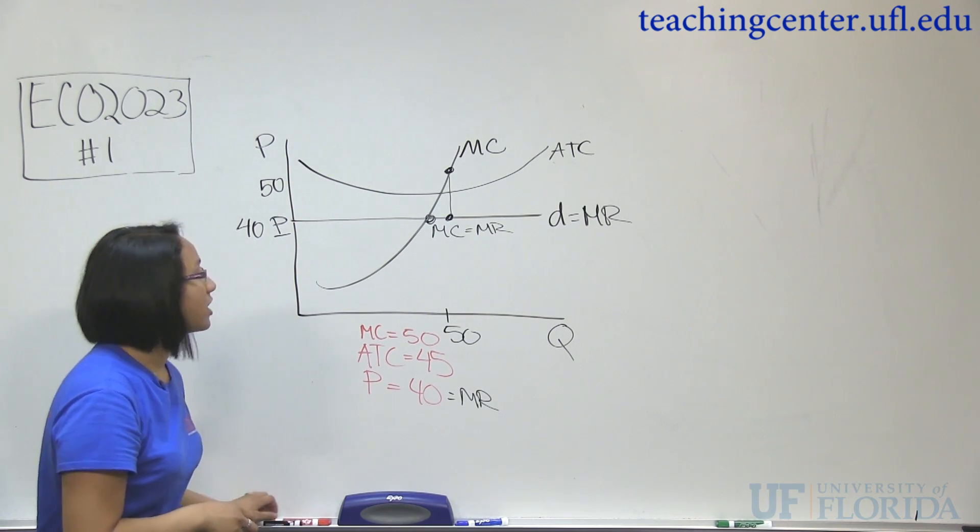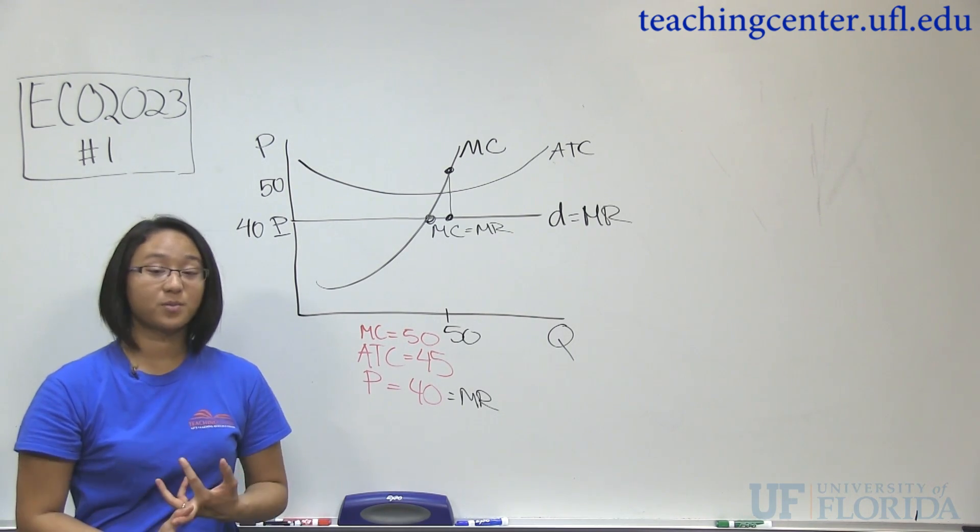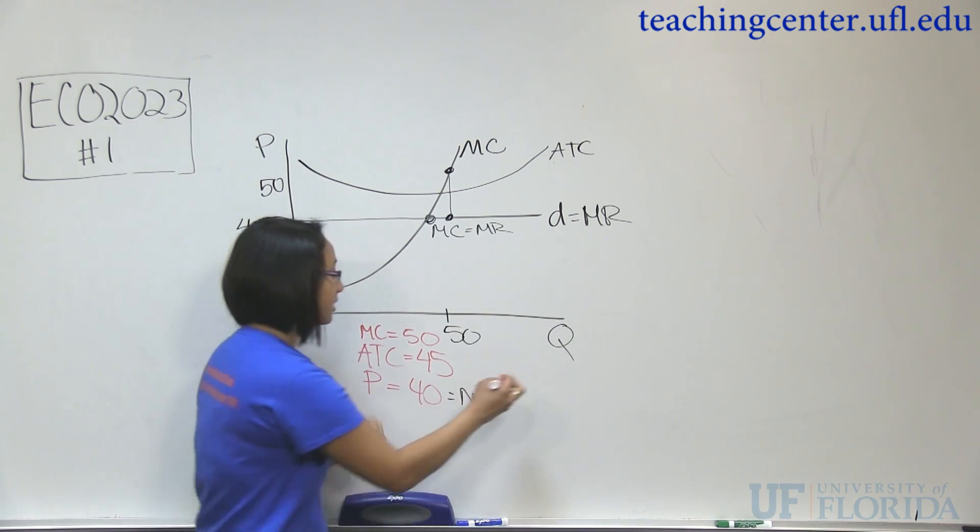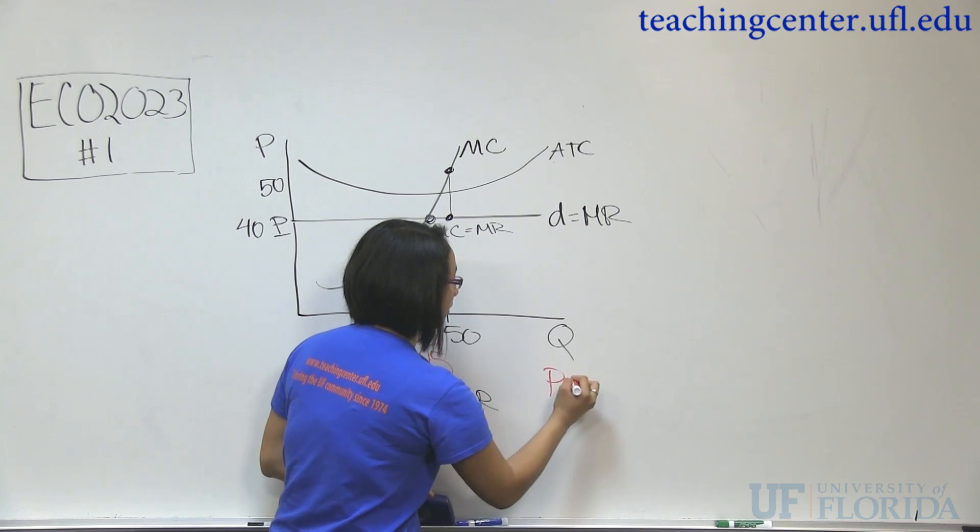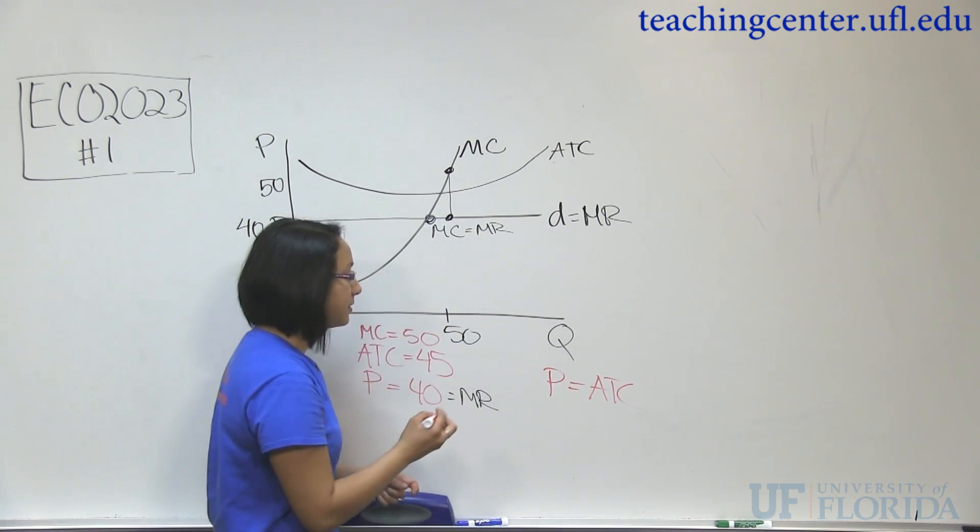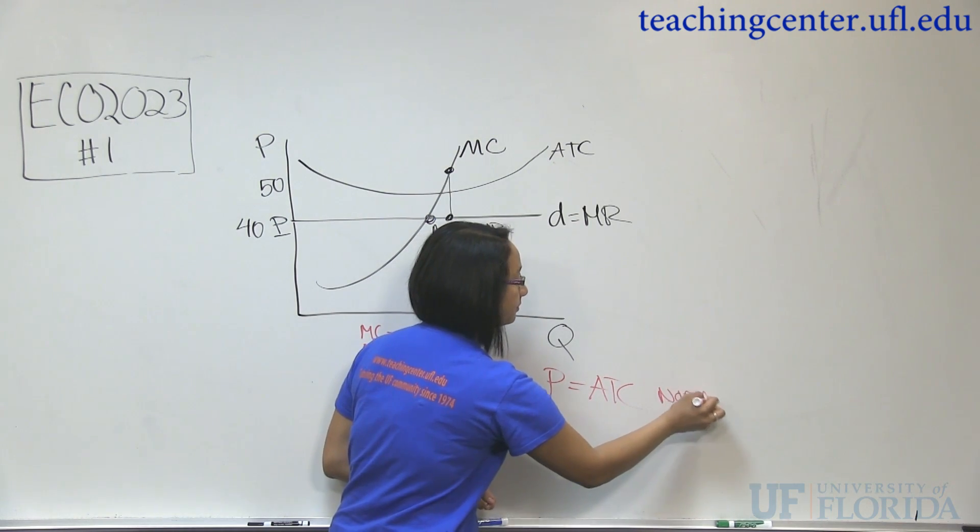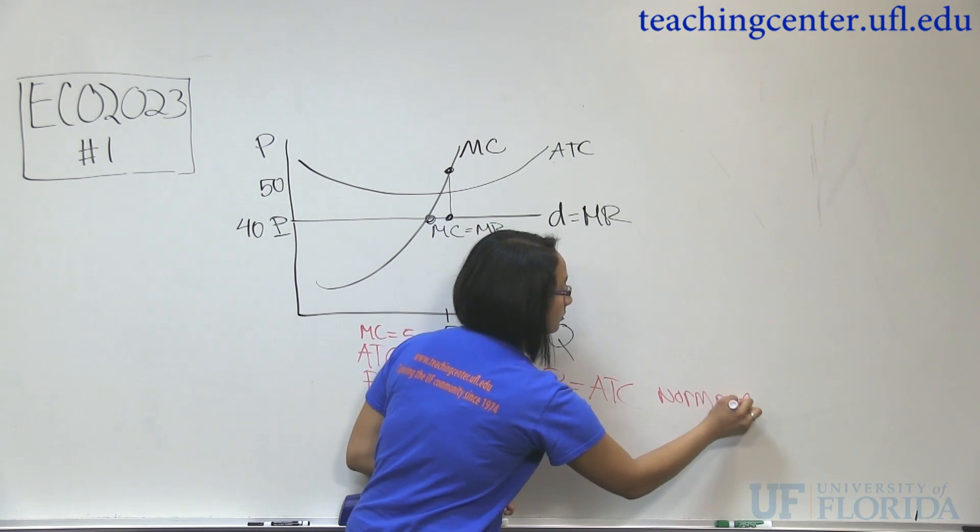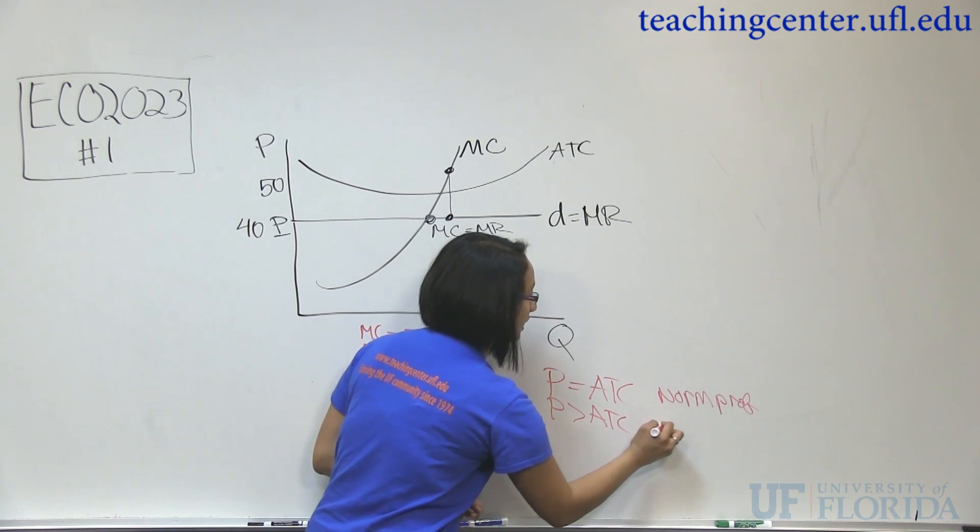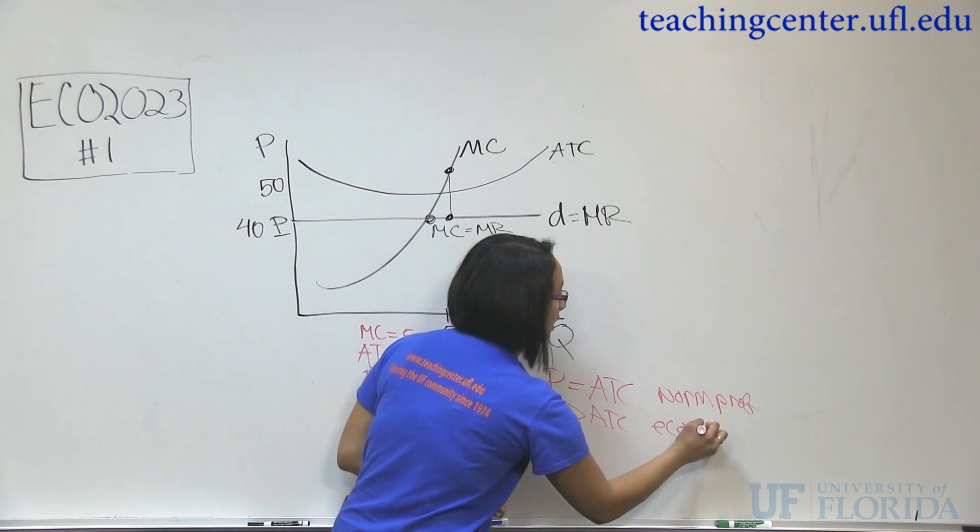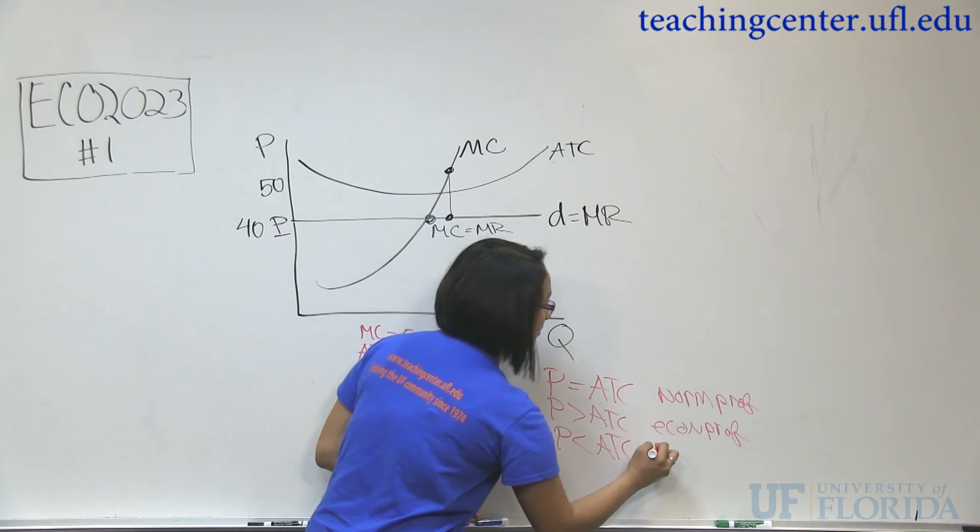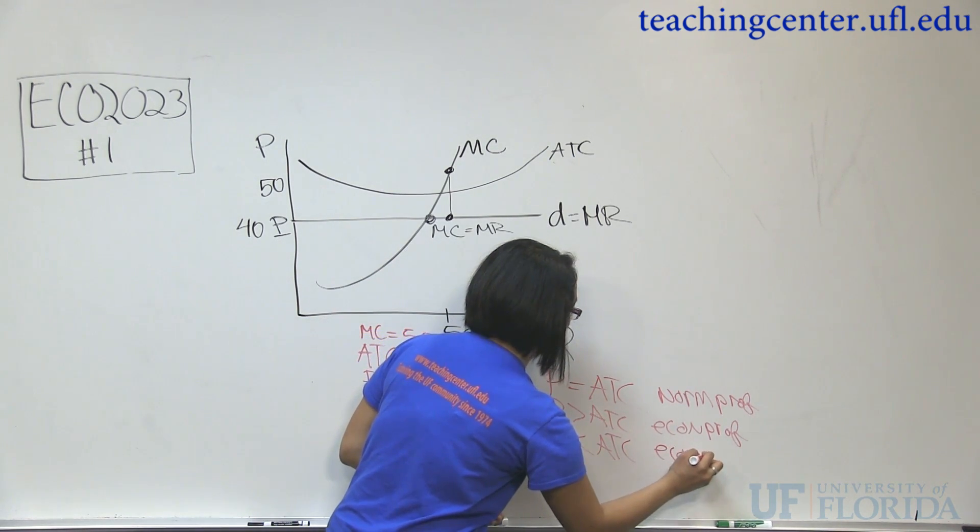Now in answer to the second part of the question, whether or not you're making a loss, normal profit, or an economic profit, you have to know three things. So if price is equal to average total cost (ATC), you're making a normal profit. If price is greater than ATC, you're making an economic profit. And if price is lower than ATC, you're making an economic loss.